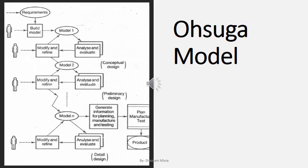The third model is the Oshoga Model. In this model, we build a model according to the requirements of the customer. If the model is completed, we do all the modifications and testing on it. If it is okay, then it goes to the market. If it is not okay, we do modifications again, performing analysis and evaluation, then prepare model two, which is a conceptual design. If model two meets satisfaction, it goes to the market; if not, we modify and refine it again. This iteration process continues again and again, with evaluation and analysis repeated until the final model is reached.